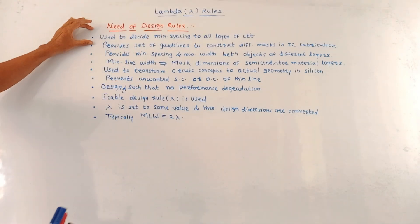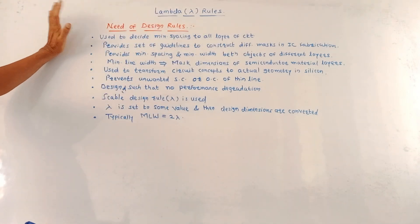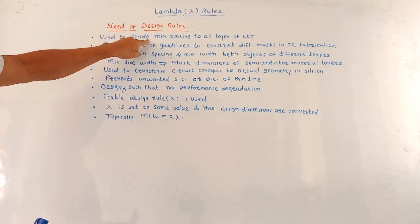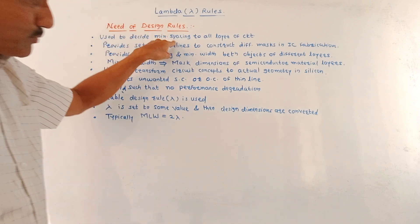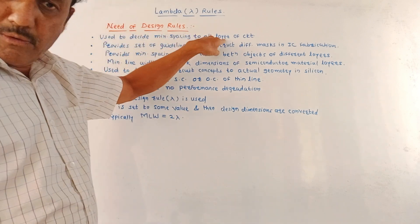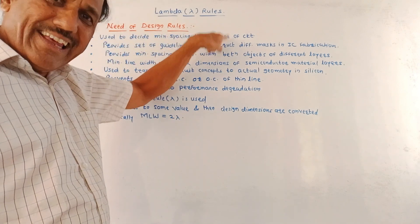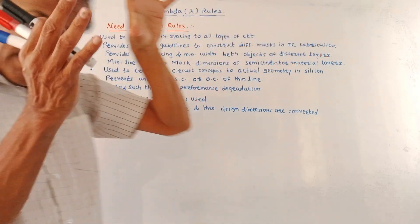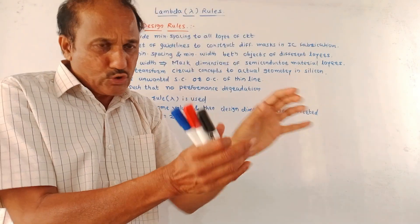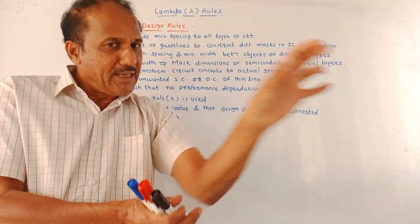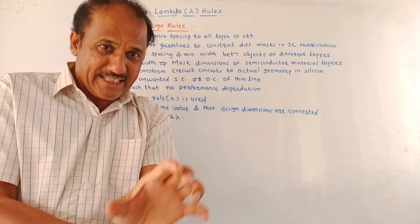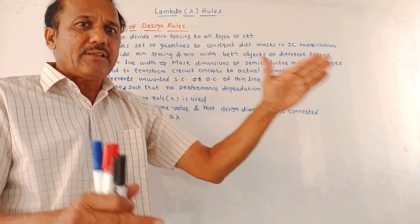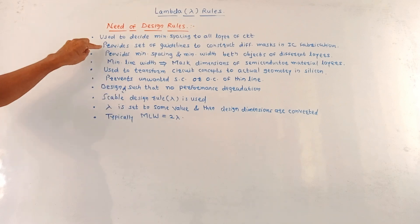The first necessity is these rules are used to decide the minimum spacing between all layers of the circuit. There are different layers, so by making use of these rules we decide what should be the minimum spacing, the minimum gap between the different layers of the circuit.